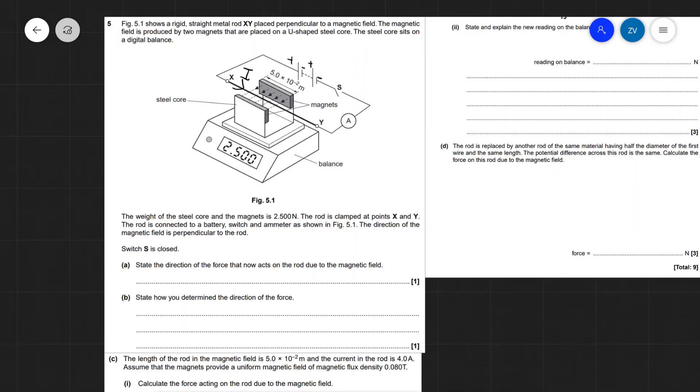State the direction of the force that now acts on the rod due to the magnetic field. Well, because the rod, which is essentially a conductor that acts like a wire, is placed in a magnetic field between those two magnets, then it will experience a magnetic force.